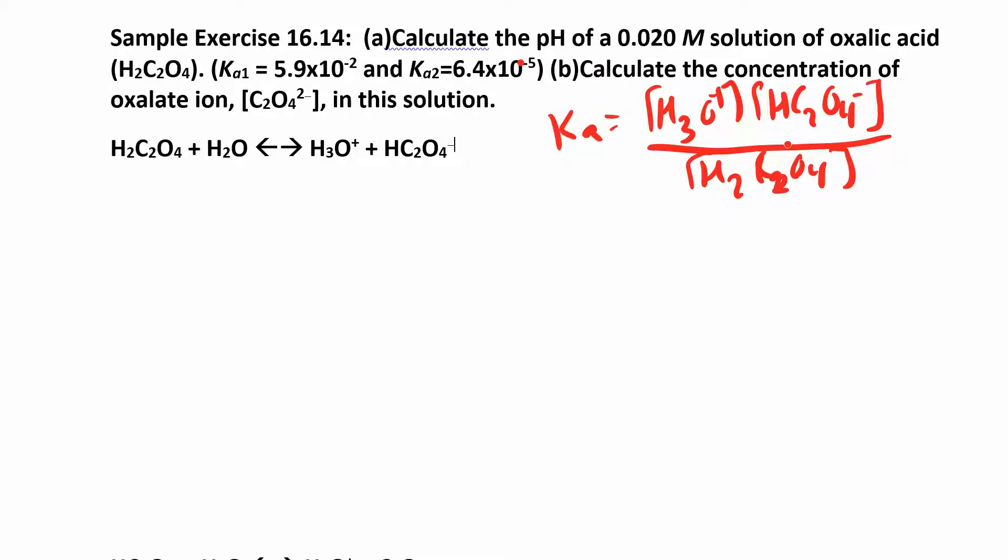So we set up our Ka expression. We know that Ka is 5.9 times 10 to the negative 2. As soon as you see that Ka of 5.9 times 10 to the negative 2, that's kind of big, which means your ionization is probably going to be more than 5%, which means we probably have to use the quadratic equation.